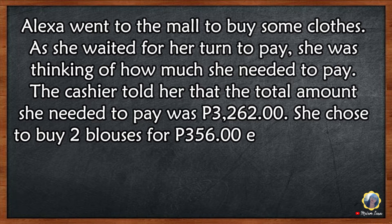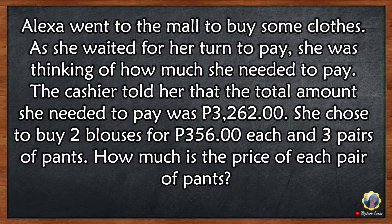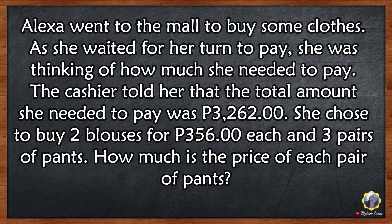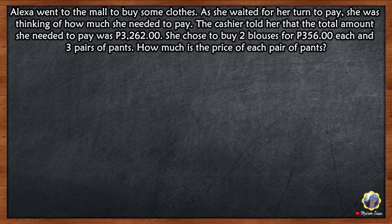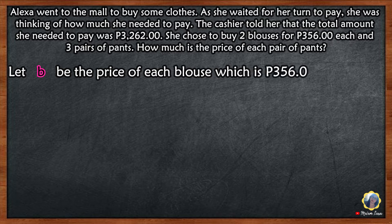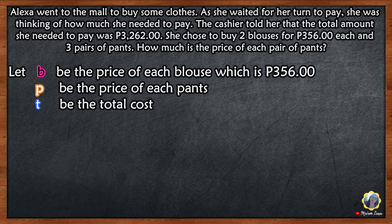Let's analyze the given problem. Alexa went to the mall to buy some clothes. As she waited for her turn to pay, she was thinking of how much she needed to pay. The cashier told her that the total amount she needed to pay was P3,262. She chose to buy 2 blouses for P356 each and 3 pairs of pants. How much is the price of each pair of pants? Let's use variables to represent the price of each item. Let B be the price of each blouse, which is P356. Let P be the price of each pair of pants. Let T be the total cost of clothes.